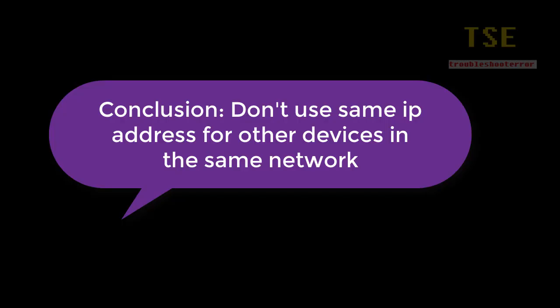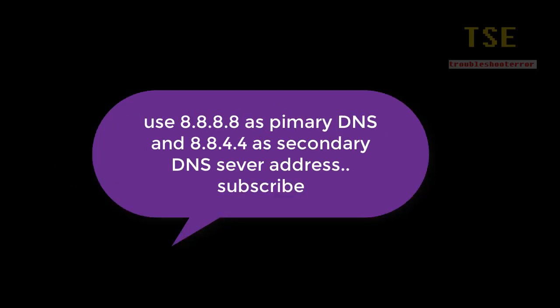In conclusion: don't use the same IP address for multiple devices on the same network, as this will cause an IP address conflict — a duplicate IP address. Also, use the correct DNS server addresses. You may use 8.8.8.8 as your primary DNS and 8.8.4.4 as your secondary DNS server address.